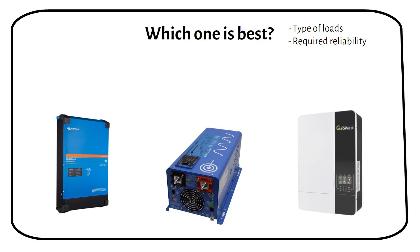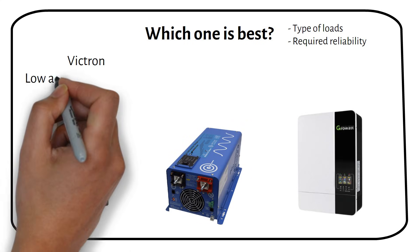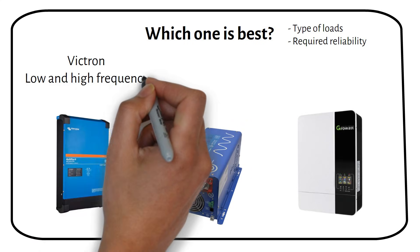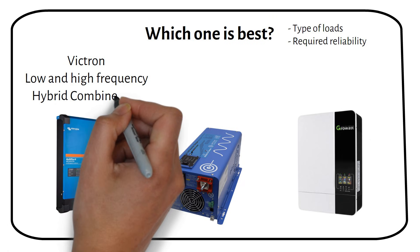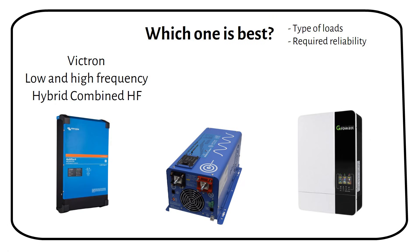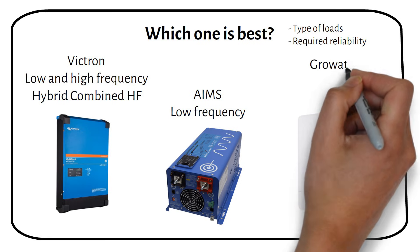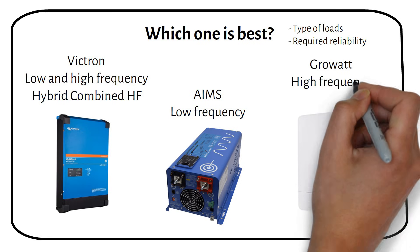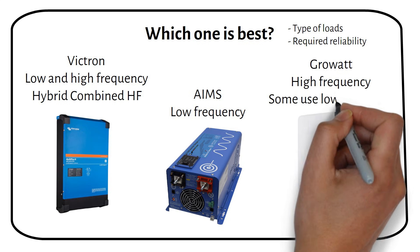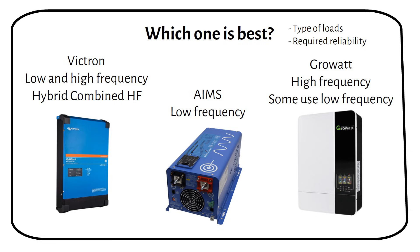Here are some examples from popular brands. Victron combines both technologies in what they call hybrid, or combined high frequency inverters. That's why their idle power consumption is so low. They use low frequency inverters. Most Groat inverters use high frequency, but they also have low frequency inverters available.